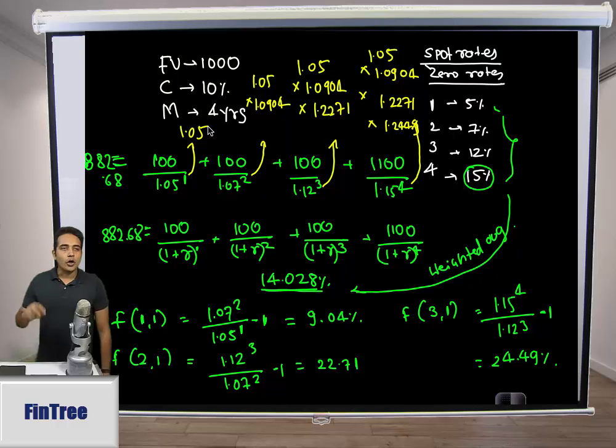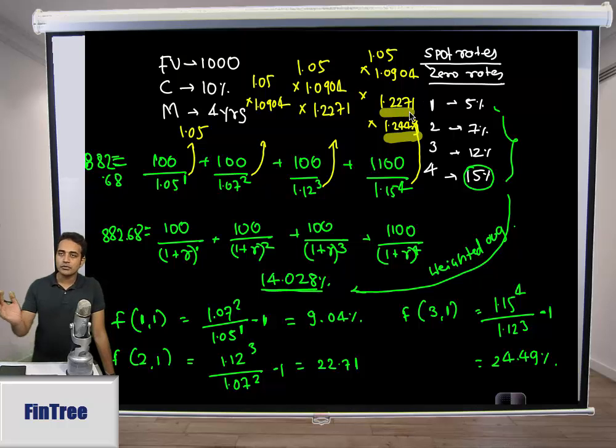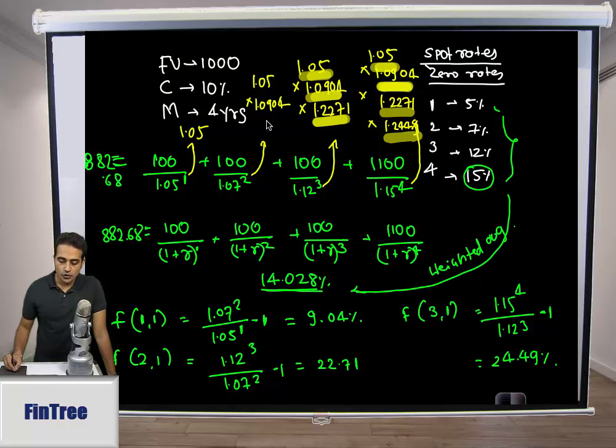By making use of these forward rates, we can discount back the cash flows and get the valuation of the bond. The thought process behind forward rate valuation: when you discount with this number from four years, you brought the valuation to three years because it's a one-year forward rate after three years. When you discount for one year from three years, you brought it to two years, then discount from two to one, then one to zero.